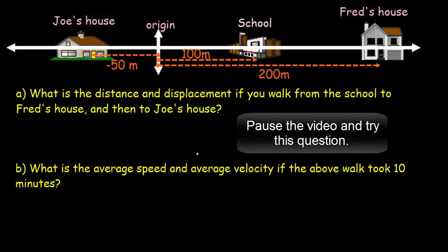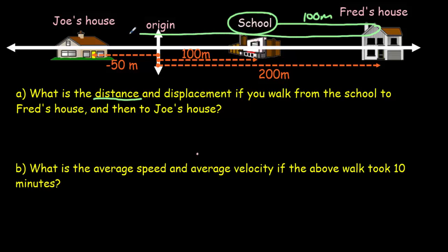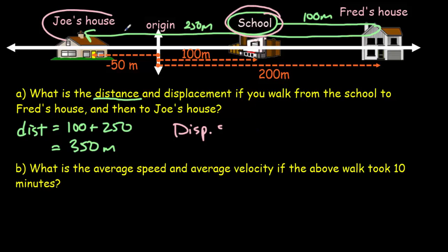Here's another question based on the same neighborhood. For the distance: starting from the school, heading to Fred's house is 100 meters, then from Fred's house all the way back to Joe's house is 200 plus 50, or 250 meters. So the total distance is 100 plus 250 equals 350 meters. Notice we don't put a plus or minus sign — distance is always positive. For the displacement, it's a vector depending only on the initial and final points — school to Joe's house — which is 150 meters to the left, so negative 150 meters.